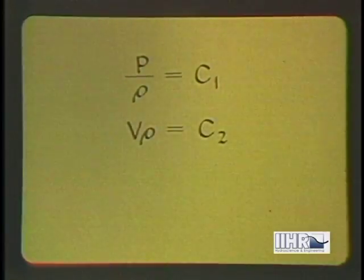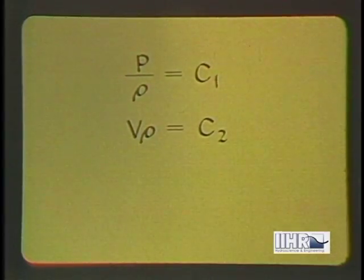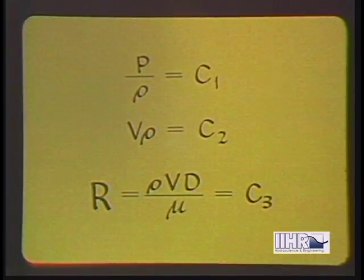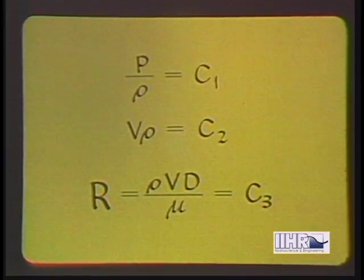For isothermal flow through a long pipe, the density will vary directly with the pressure and the velocity inversely with the density. Therefore, even though the pressure decreases because of the wall resistance, the Reynolds number and resistance coefficient will remain constant.